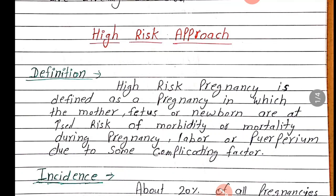High risk pregnancy ki definition: High risk pregnancy is defined as a pregnancy in which the mother, fetus or newborn are at increased risk of morbidity and mortality during pregnancy, labor or puerperium period due to some complicated factor.